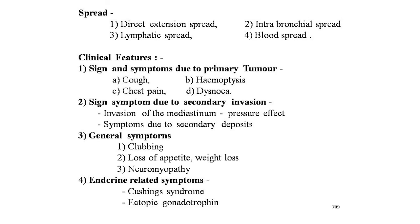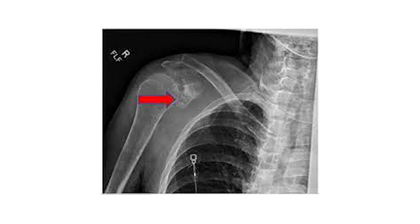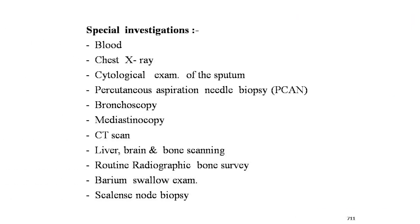Pancoast tumor: a special and well-recognized site for bronchogenic carcinoma is the apex of the lung, known as the superior sulcus tumor or Pancoast tumor. Due to its peculiar position, it produces peculiar symptoms and signs. The tumor invades the superior mediastinum early and involves the brachial plexus and cervical sympathetic nerves and the upper ribs — producing a collection of symptoms known as Pancoast syndrome. This syndrome includes Horner's syndrome, low brachial plexus involvement, and erosion of the upper two ribs. Here is a clear chest X-ray showing the Pancoast tumor.